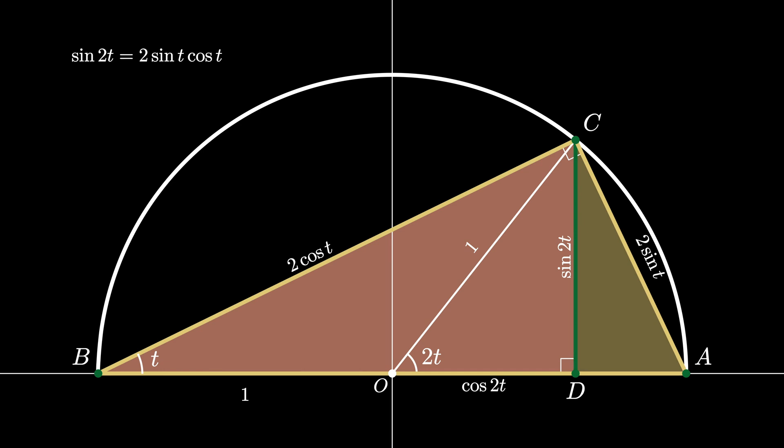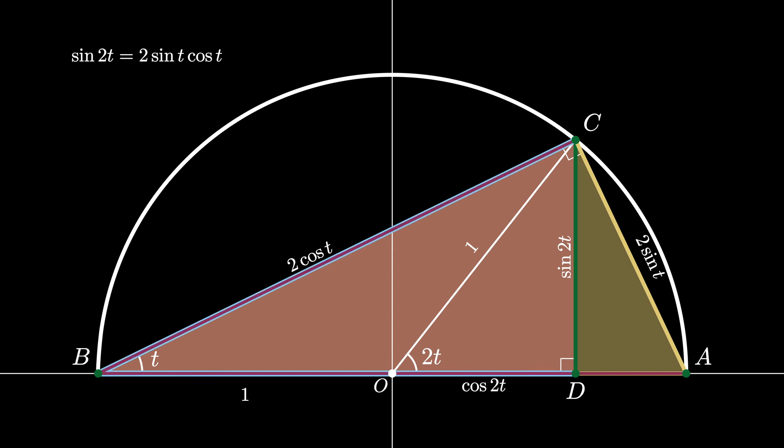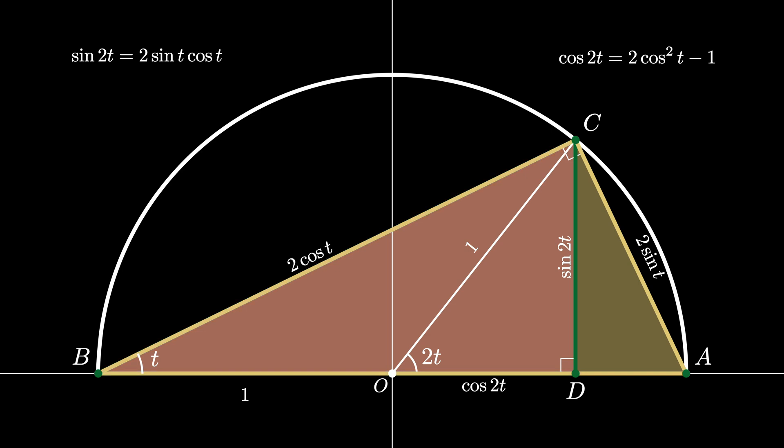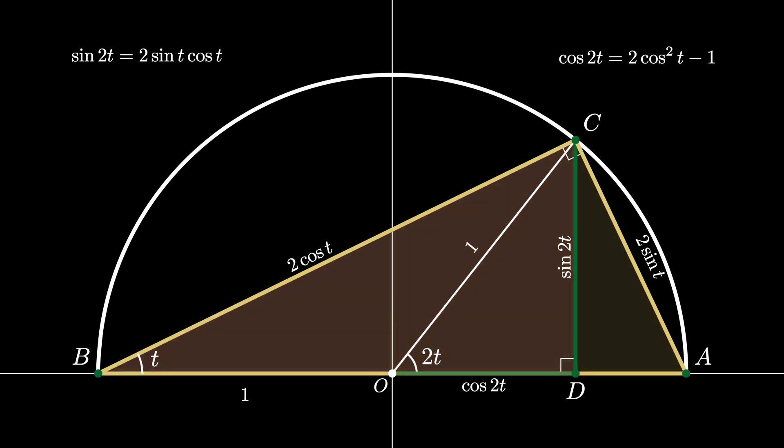We can also use similarity to see that the ratios of the long leg length to the hypotenuse are equal in both triangles. From this we see that 1 plus the cosine of 2t divided by 2 times the cosine of t must equal 2 times the cosine of t divided again by the hypotenuse which is 2. We can cancel the twos on the right side and clear denominators to see that cosine of 2t equals 2 times the cosine squared of t minus 1.